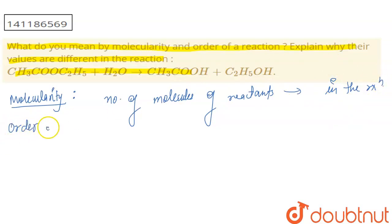Order of reaction establishes the relationship between the rate of the reaction with the concentration of the reactants in the chemical reaction.